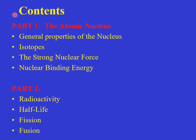This chapter is broken up into two parts. In this first part, we're going to look at the atomic nucleus, introduce it, and examine its general properties. We'll also look at isotopes, the strong nuclear force which holds the nucleus together, and nuclear binding energy. In part two, we'll look at radioactivity, half-life, fission, and fusion.